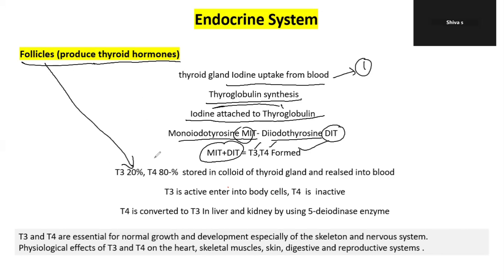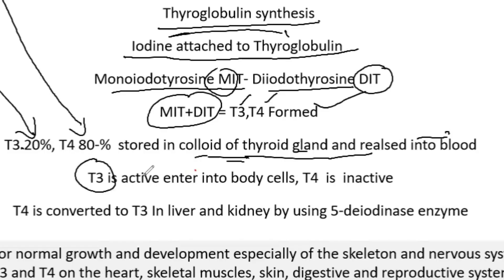T3 makes up 20% and T4 makes up 80% of thyroid hormone output from follicle cells. T3 is the active form. T4 is inactive, but T4 is converted to T3 in the liver and kidney, making it active in body cells.